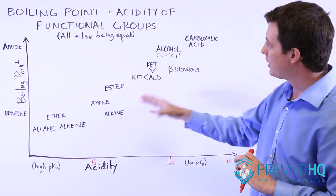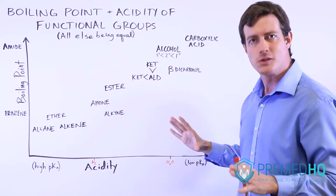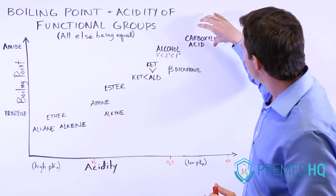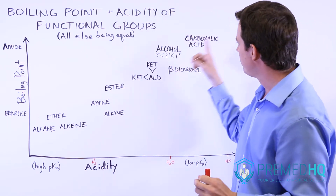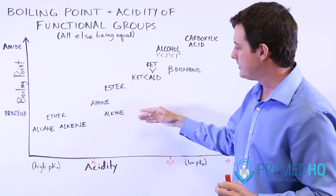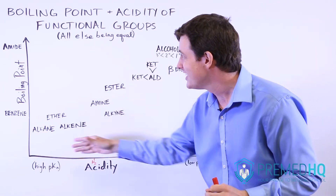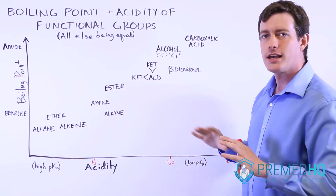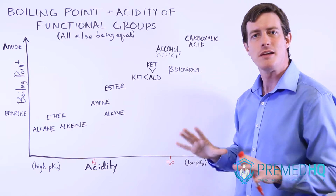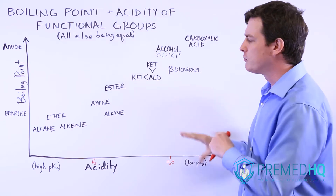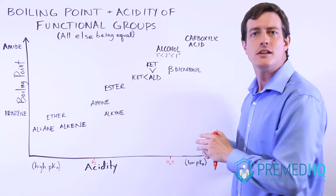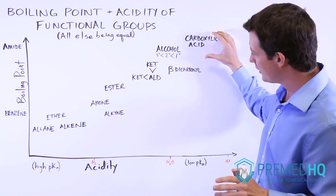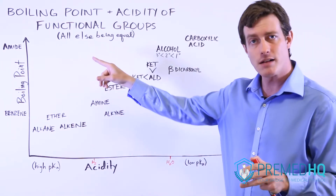Thinking about polarity is one of the best ways to solve organic chemistry problems. As you move up toward carboxylic acids, you see things that are becoming very, very polar — and that correlates with an increase in both acidity and boiling point. That's a really crucial distinction. Again, this is with all else being equal and the same number of carbons, not considering other substituents, but in general, carboxylic acids are very polar, so they have high acidity and a high boiling point.